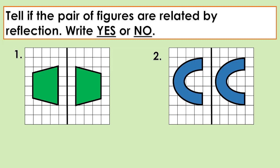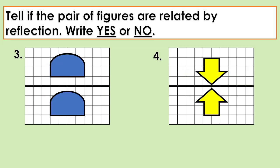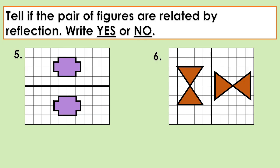Let's answer this: tell if the pair of figures are related by reflection — yes or no. Number one — yes. Number two — no. Number three — no. Number four — yes. Number five — yes. Number six — no.